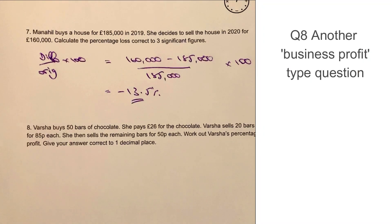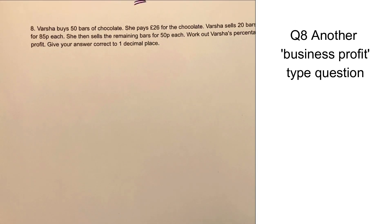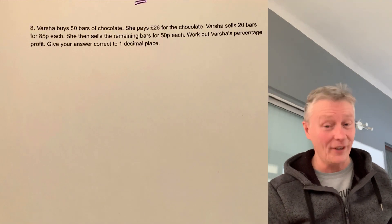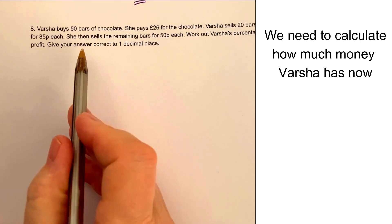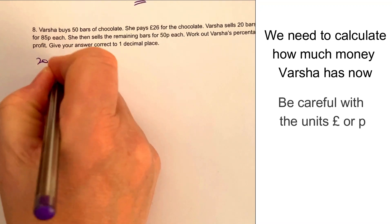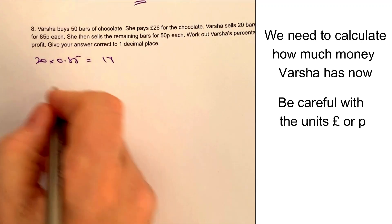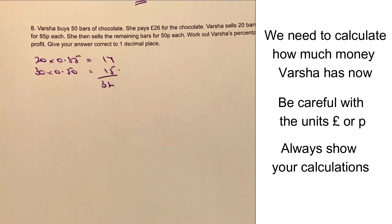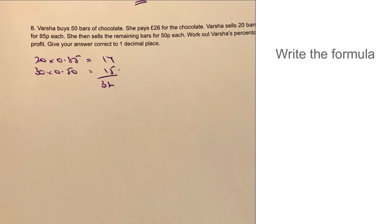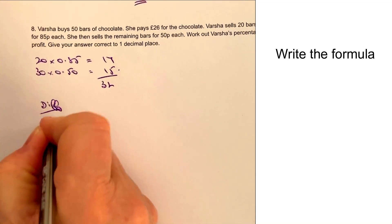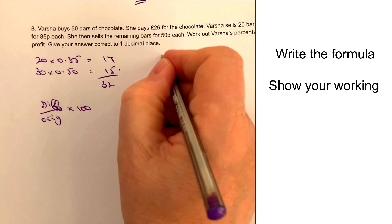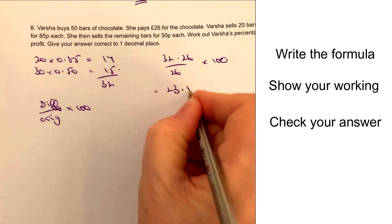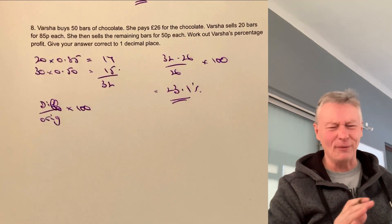Question number eight: Varsha has bought some chocolate bars. We need to work out how much she's got now. She sells 20 bars at 85p each, giving her £17, and then she sold the remaining 30 bars at 50p each, giving £15. So her total now price is £32. Using difference over original multiplied by 100: that's 32 minus 26, divided by 26, multiplied by 100. That gives us 23.1% profit for Varsha selling her chocolate bars.